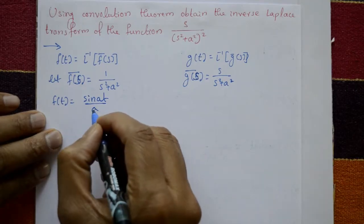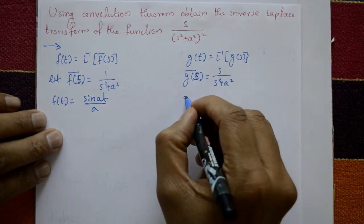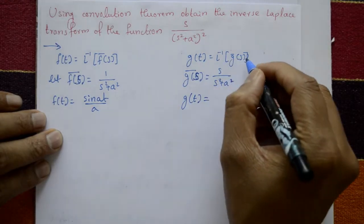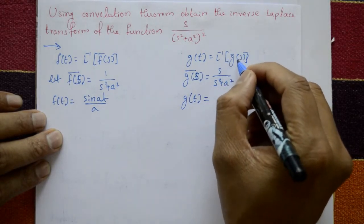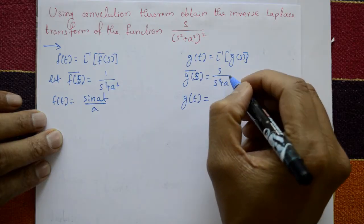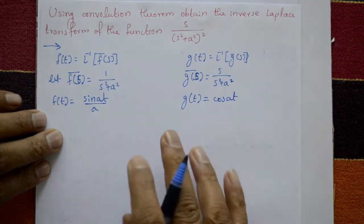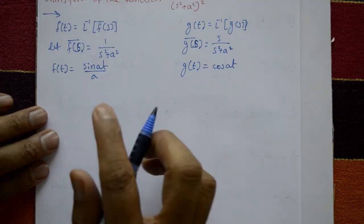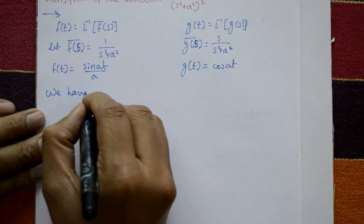Next, g(t) is required. g(t) = inverse Laplace of Ḡ(s). This is Ḡ(s) — the inverse Laplace of s/(s²+a²) is cos(at). Now using the convolution theorem we have: